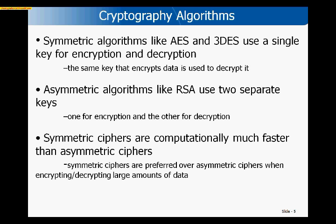That same key that encrypts data is also used to decrypt the data. With asymmetric algorithms like RSA, they use two different keys — one key for encryption and a different key for decryption. Symmetric ciphers are computationally much faster and don't require as much processing power, whereas asymmetric ciphers are more processor intensive. Symmetric ciphers are preferred, but we'll find that typically we use a combination of both.